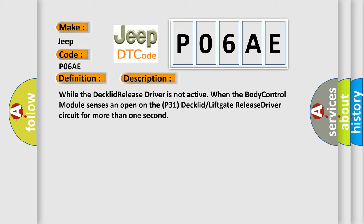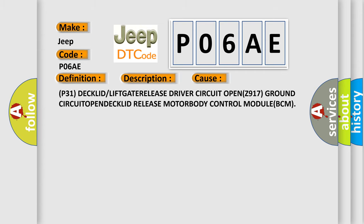When the body control module senses an open on the P31 decklid liftgate release driver circuit for more than one second while the release driver is not active. This diagnostic error occurs most often in these cases: P31 DECK LID or LIFTGATE RELEASE Driver circuit OPEN, Z917 GND CIRCUIT OPEN, DECK LID RELEASE MOTOR, BODY CONTROL MODULE BCM. The Airbag Reset website aims to provide information in 52 languages.